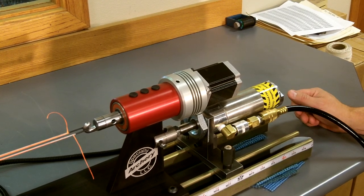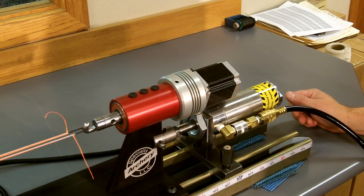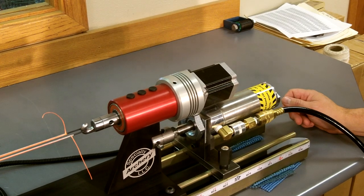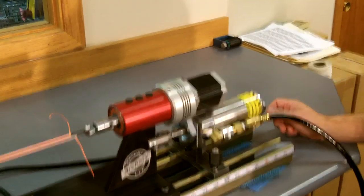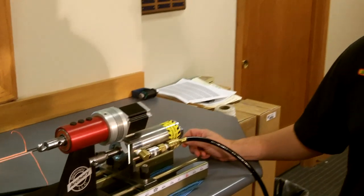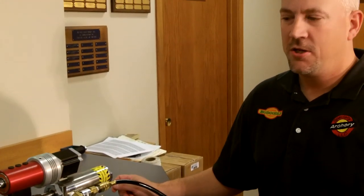One PSI out of your air compressor equals 2.84 pounds of pressure applied to your string. So for example, if you have 100 PSI coming out of your compressor, you're going to tension your string to 284 pounds.